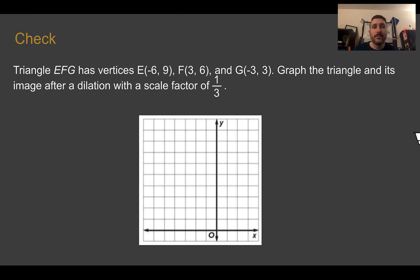Check your answer. First, here are your original coordinates. So negative 6, 9 is E. 3, 6 is F. And negative 3, 3 is G. Dilating it by 1 third, everything should be 1 third as far away from the origin as it was before. E prime would be at negative 2, 3. F would be at 1, 2. And G would be at negative 1, 1. All these here were just multiplied by 1 third, which is also just dividing by 3.